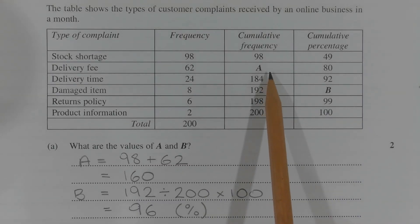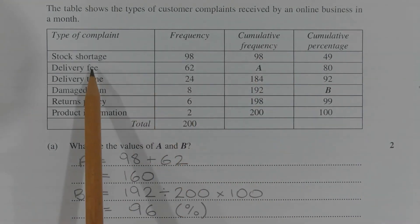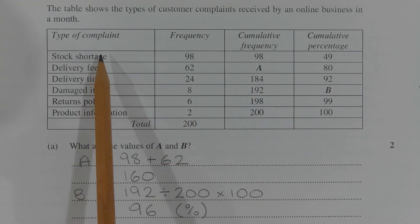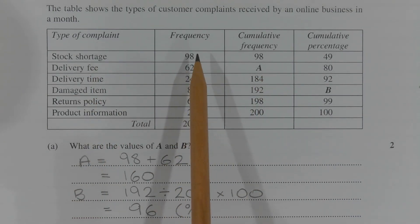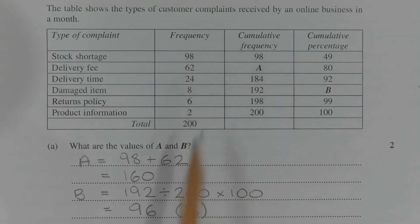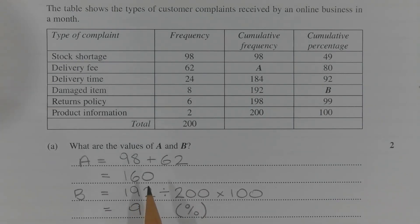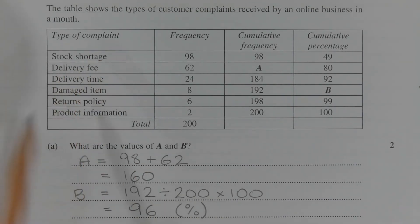Value A represents the cumulative frequency, or the total number of occurrences, of delivery fee and stock shortage. To get the total number of occurrences, we add the frequency column up to and including the row that includes A. So A is equal to 98 plus 62, which equals 160. In other words, there are 160 occurrences of complaints that involve stock shortage or delivery fee.